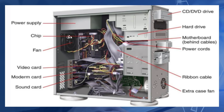From the side panel, you can see the internal parts of the system unit. On the left we have the power supply, the chip, the CPU fan, the video card, modem card, and sound card. Next, you have the CD or DVD drive, the hard drive, the motherboard behind all the cables, the power cord, the ribbon or SATA cables, and the extra case fan.